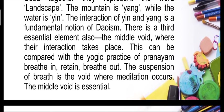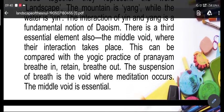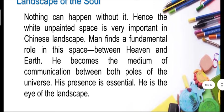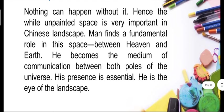There is a third essential element: the middle void. The middle void exists so that interaction can take place — between whatever elements are present in the painting. Nothing can happen without it. Hence, the white unpainted space is very important in Chinese landscape painting. The unpainted white space is the void. Man finds a fundamental role in this space between heaven and earth, becoming the medium of communication between the two poles of the universe. He is the eye of the landscape.